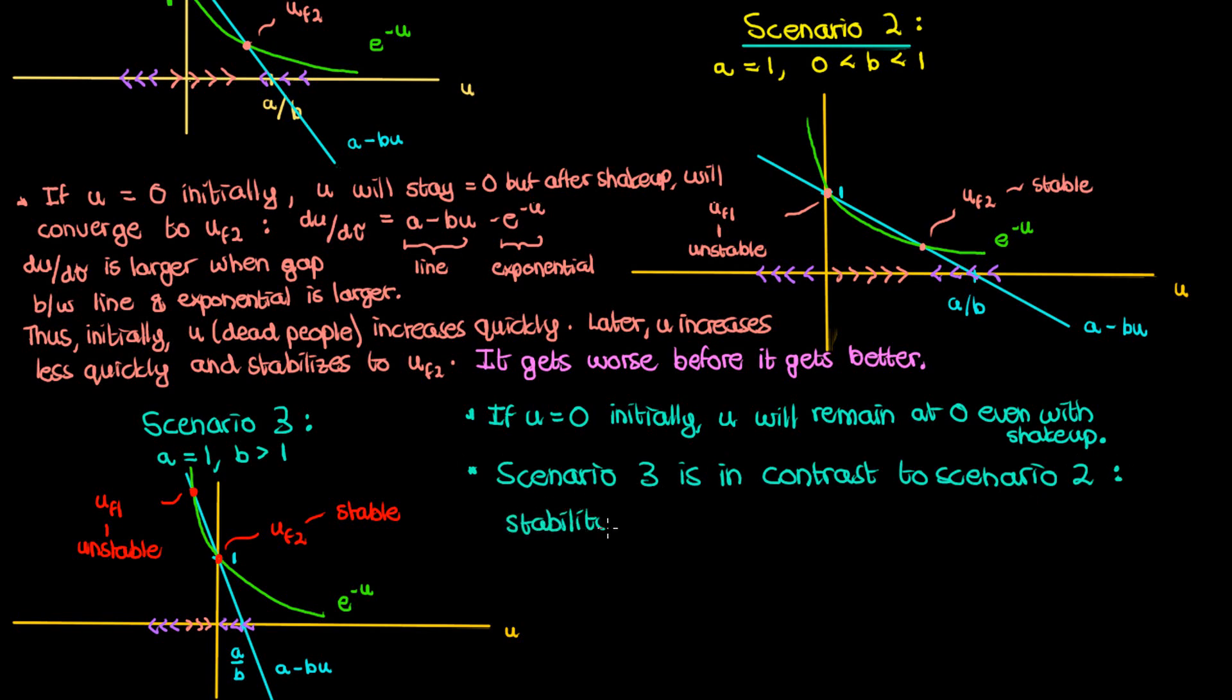Essentially the stability between zero and the non-zero fixed point has been exchanged as we went from a b less than one to a b greater than one. And what do you call dynamic behavior that involves an exchange of stability?